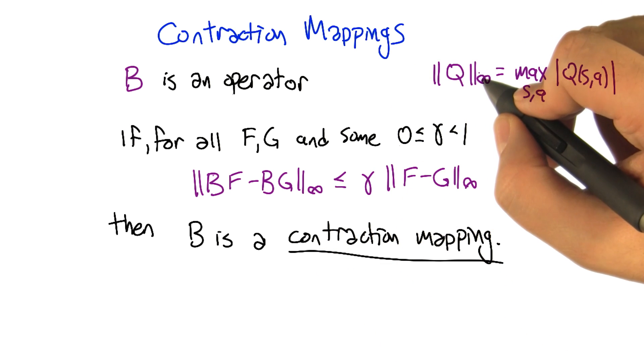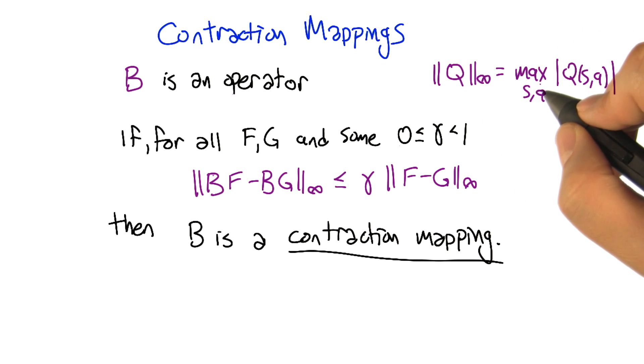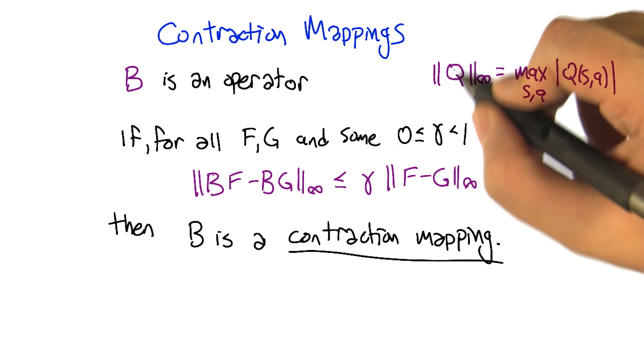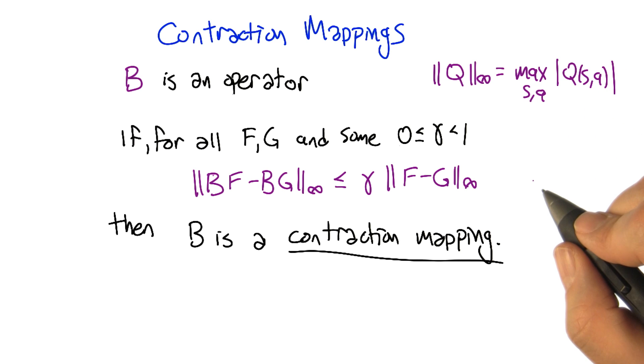So this notation here is sometimes called the infinity norm, the max norm. And all it's doing is saying this is a function of states and actions. So which is the largest? What's the largest state action pair in terms of absolute value? So that's just saying, what's the maximum value that the function Q can have?